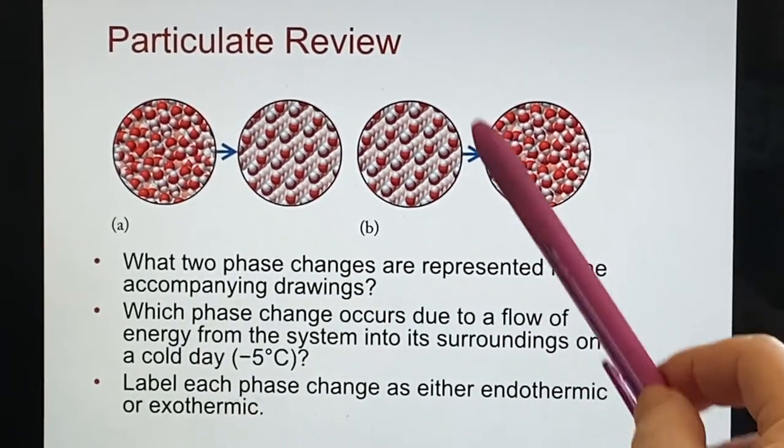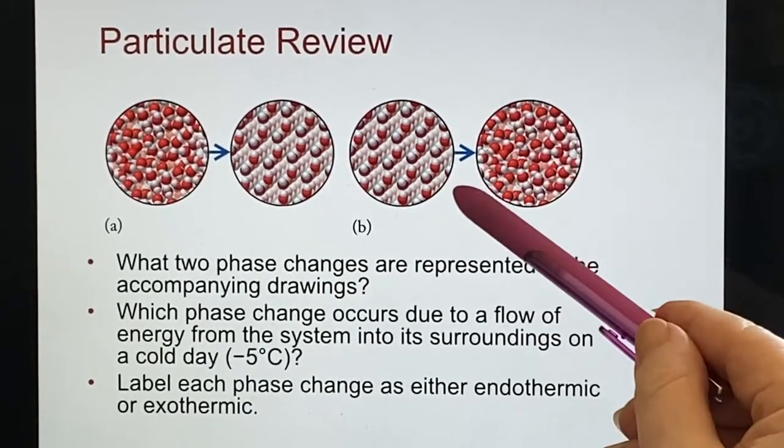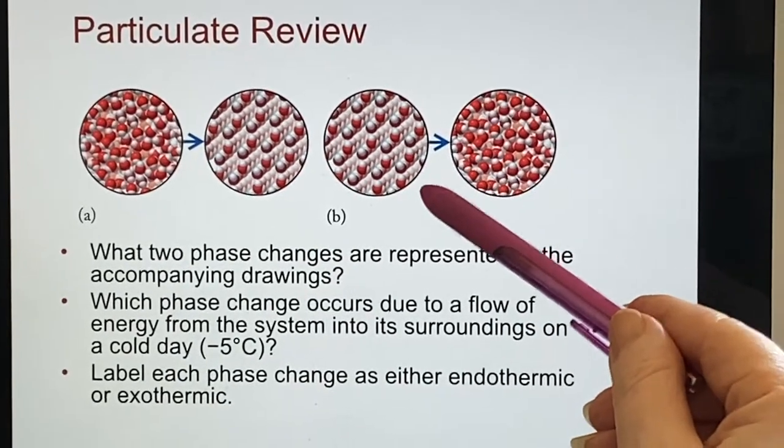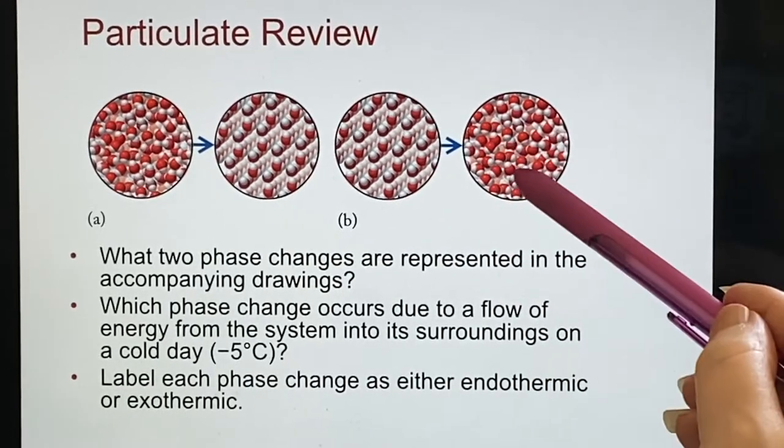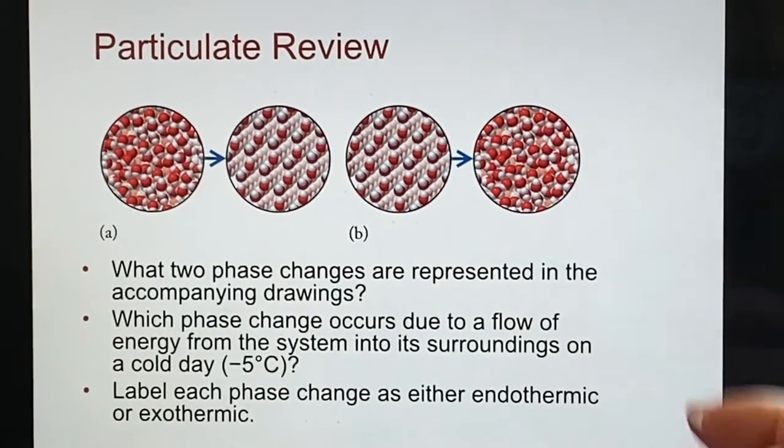This one's easier to realize because if you're trying to melt an ice cube and turn it into water, you're going to give it heat to make that happen. So yeah, it makes a lot more sense to think of this one and say, oh yeah, that's endothermic. Of course, it needs heat in order to melt.